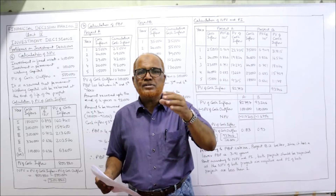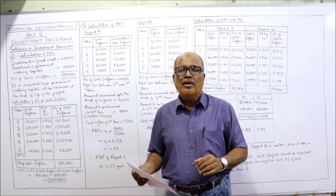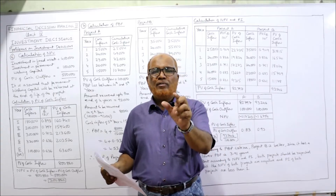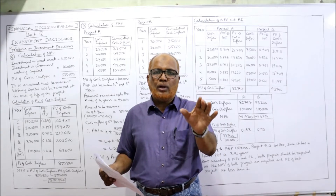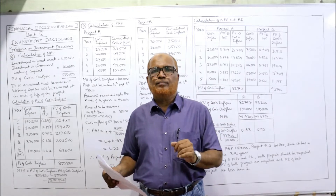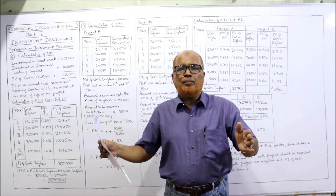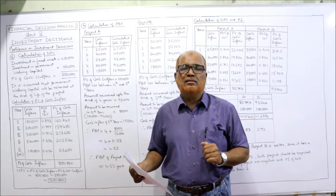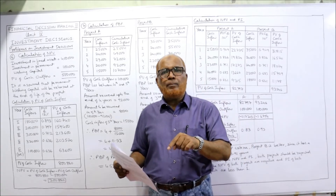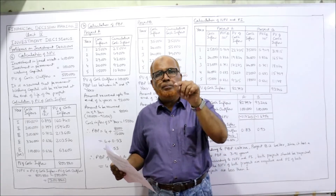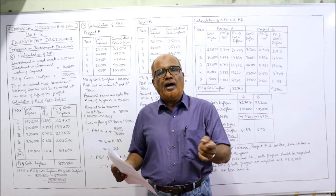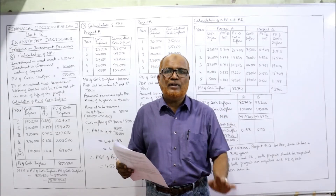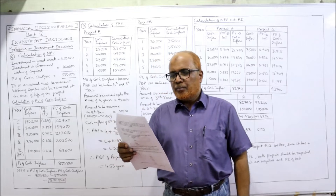5 lakh rupees is the PV of cash outflow. You have to make one assumption: permanent working capital will be there only up to the life of the project. At the end of the project's life, the permanent working capital will be released. So permanent working capital will appear in PV of cash outflow and also in PV of cash inflow at the end of the project's life.